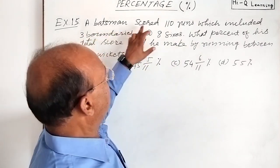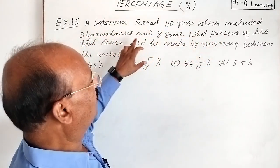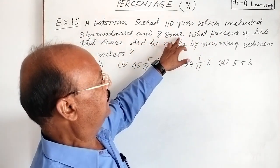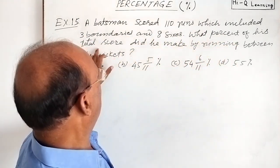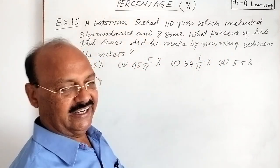Here question is, a batsman scored 110 runs which included 3 boundaries and 8 sixes. What percent of his total score did he make by running between the wickets?